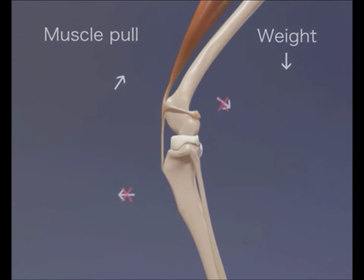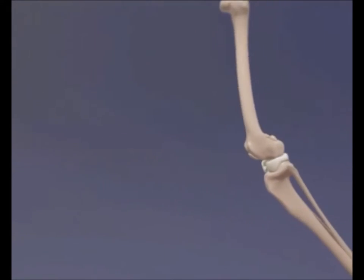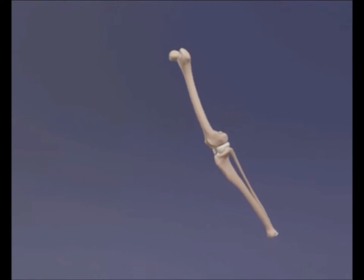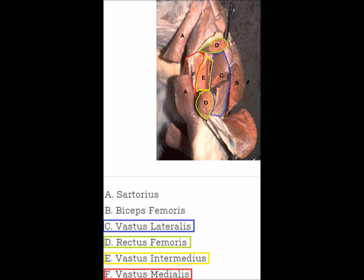Extension is movement which increases the angle between two bones making up a joint. Extension of the stifle joint is relatively simple, involving the large muscle group, the quadriceps, that include the four muscles on the cranial region of the thigh. Functioning as the greater extensors of the knee, the belly of the quad muscles are generally located towards the trunk, acting to reduce the energy required to move the limbs during locomotion.